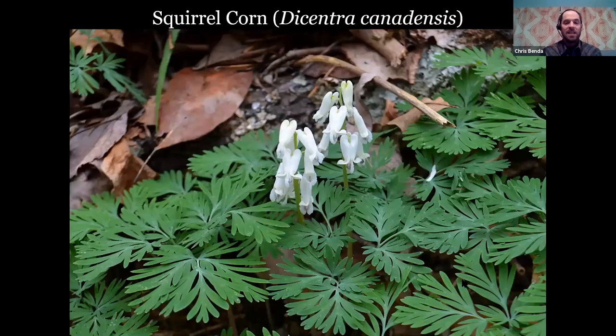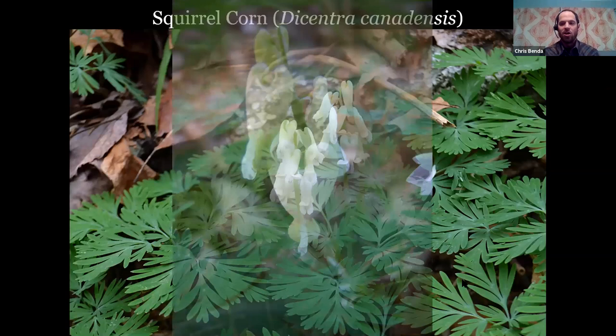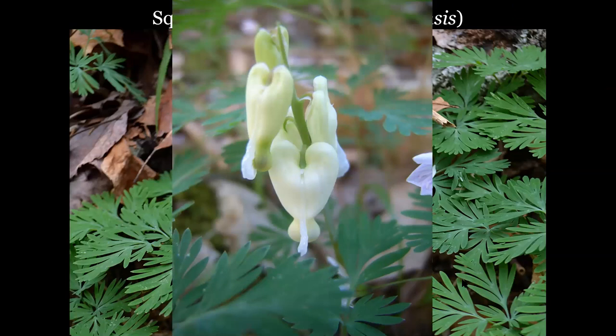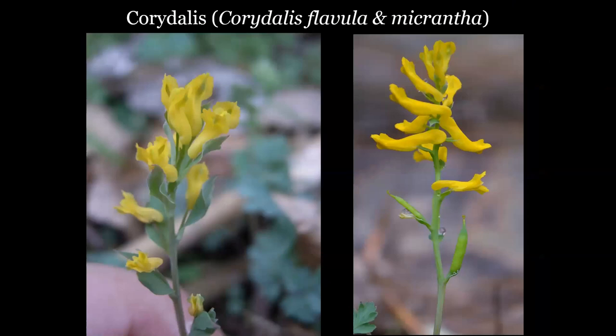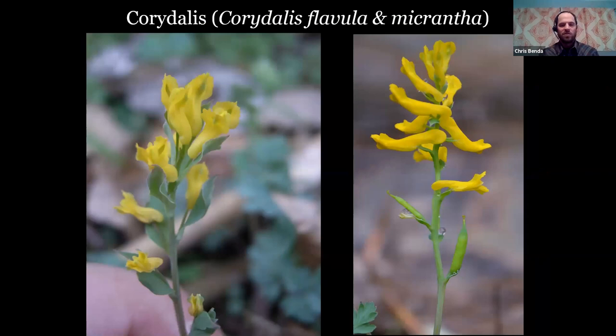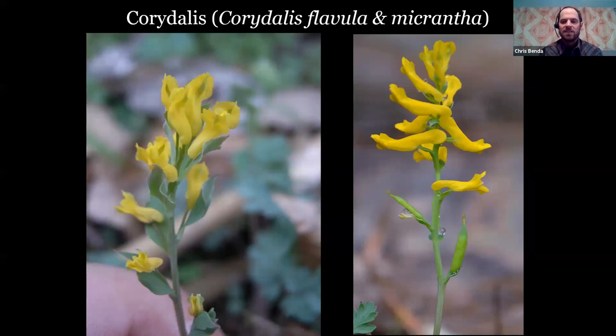Both Dutchman's breeches and squirrel corn are related to the garden plant bleeding heart. Corydalis is another early bloomer related to the previous ones, though the flowers are totally different. On the left we have Corydalis flavula, a little more common with smaller flowers. On the right is Corydalis micrantha with larger, deeper yellow flowers and a larger plant overall. These are sometimes called fumeworts, formerly in the poppy family, and some now place them in the fumitory family.